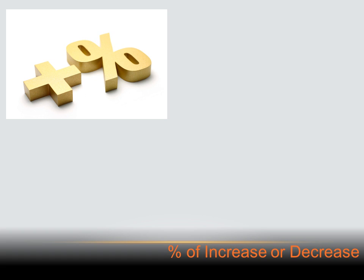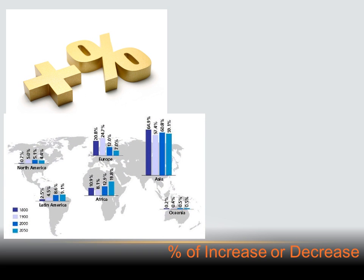Percentage increase means that the original amount increases by some percentage of itself. Here's a map of the globe showing the increase in population as a percent for North America, Europe, Asia, etc., by years. In 1800, the population in North America grew by only 0.7%. In Asia, however, the population increased almost 65%. So the population in Asia was growing at a much higher percentage than the population in North America.